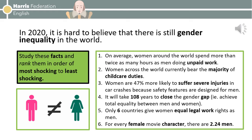In 2020, it's hard to believe that there is still gender inequality in the world. Study these facts and rank them in order of most shocking to least shocking. Here they are. Fact 1: on average, women around the world spend more than twice as many hours as men doing unpaid work.